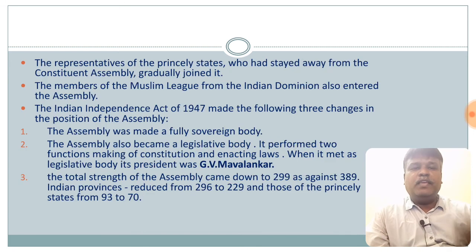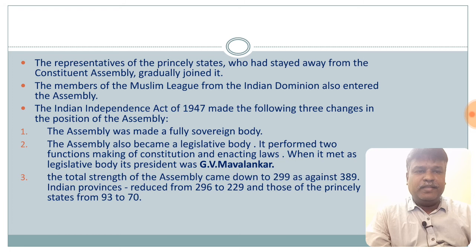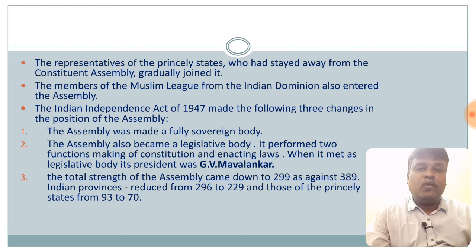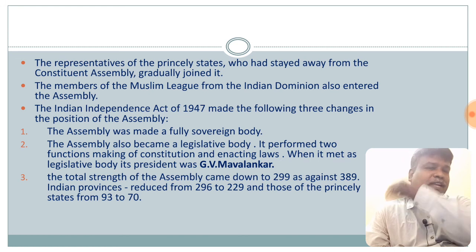Once the Constituent Assembly started working, Sardar Vallabhbhai Patel was meeting with different princely states asking them to join the Indian Union. As a result, representatives of princely states who had stayed away gradually joined. Even some Muslim League members belonging to the Indian dominion also slowly joined the assembly.